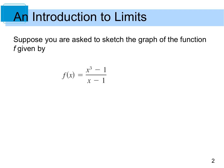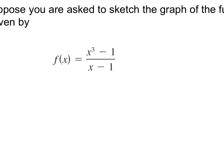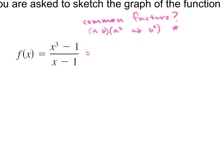Suppose you're asked to sketch a graph of the function f given by this. The first thing we'd want to ask is: do we have any common factors? How can we factor x cubed minus 1? It's the difference of cubes. When we factor the difference of cubes it's a minus b times a squared plus ab plus b squared. Anybody know the acronym we use to remember the signs for perfect cubes? It's SOAP.